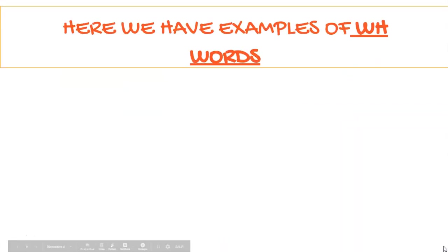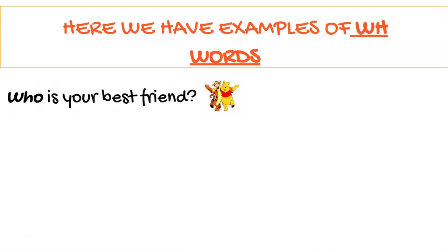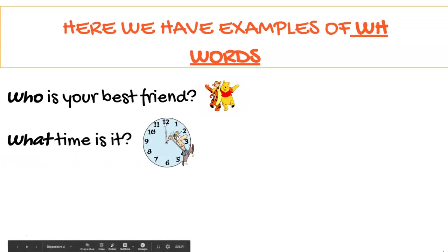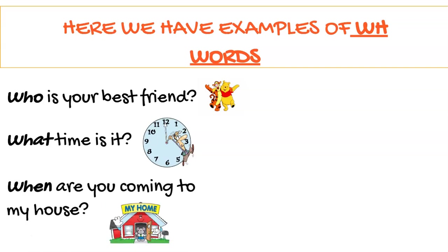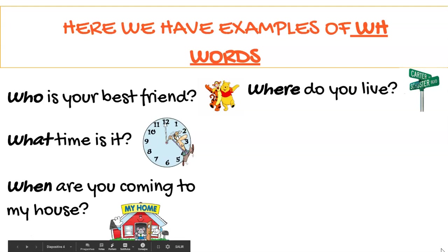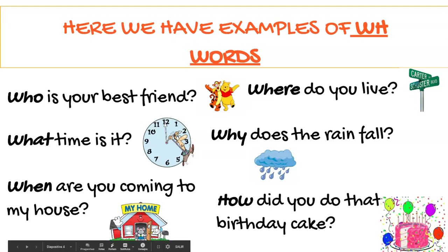Let's see some examples of WH words. Who is your best friend? What time is it? When are you coming to my house? Where do you live? Why does the rain fall? And finally, how did you do that birthday cake?